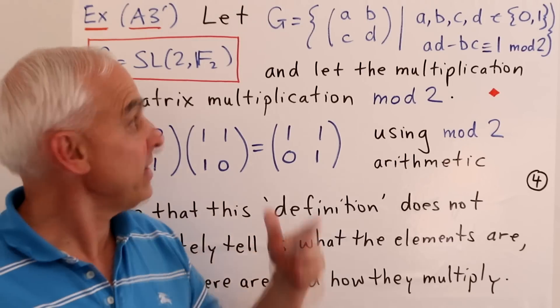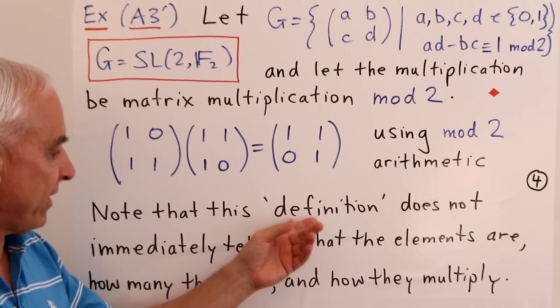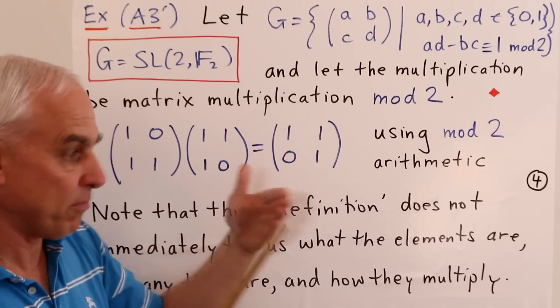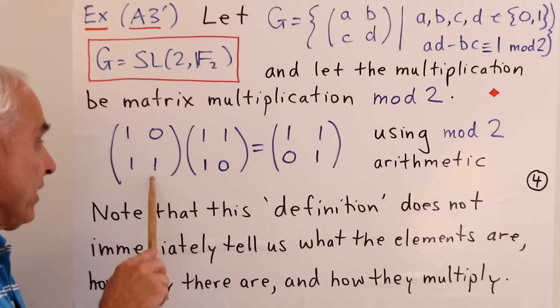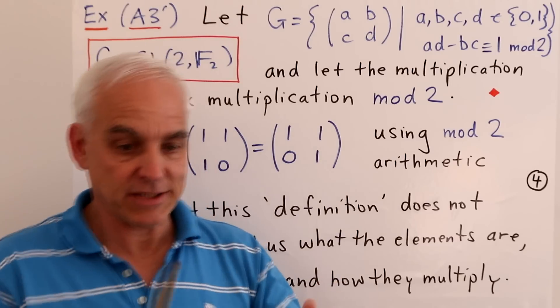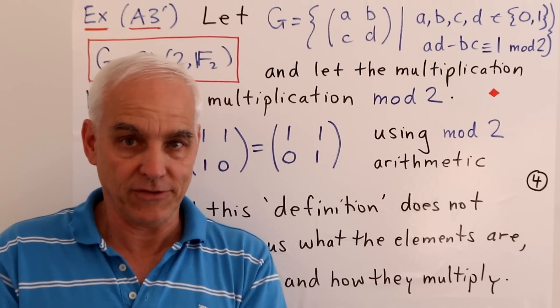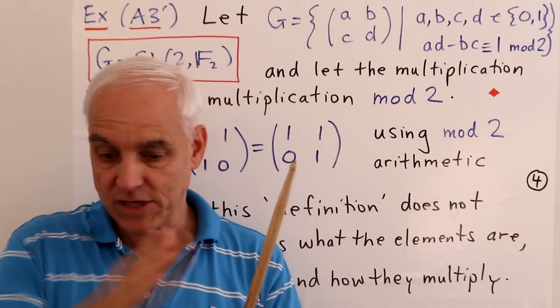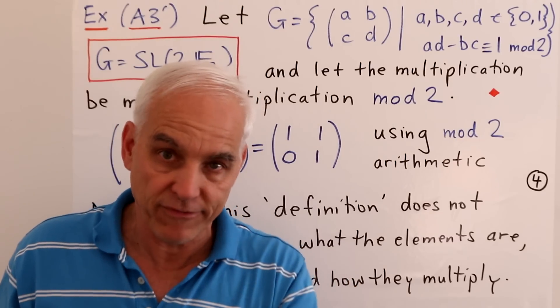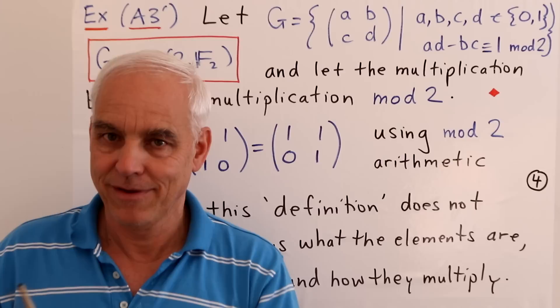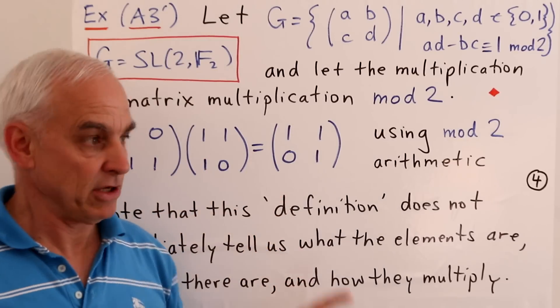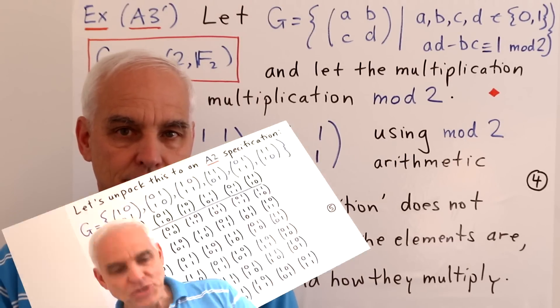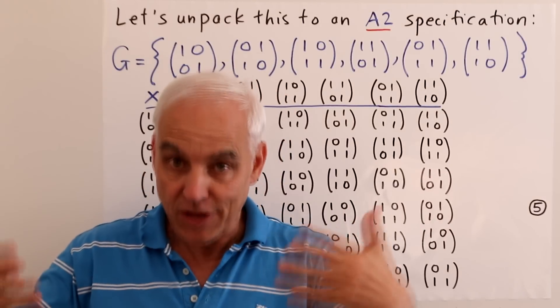So note that this definition, it's one of these A3 prime definitions, it's not very specific about what the set actually explicitly is. And it does leave us to understand what or to compute what the multiplication is. In other words, it's not telling us directly what the product of these two things is, it's giving us a recipe for us to be able to compute what the product is. So it's a different kind of structure than when you are given the multiplication table directly, just as a table, and you're not required to understand anything more, you just look up stuff. Here, we're asked to calculate stuff. So for a computer, this requires some more sophistication, because we have to know something about matrix multiplication in order to understand what this group is.